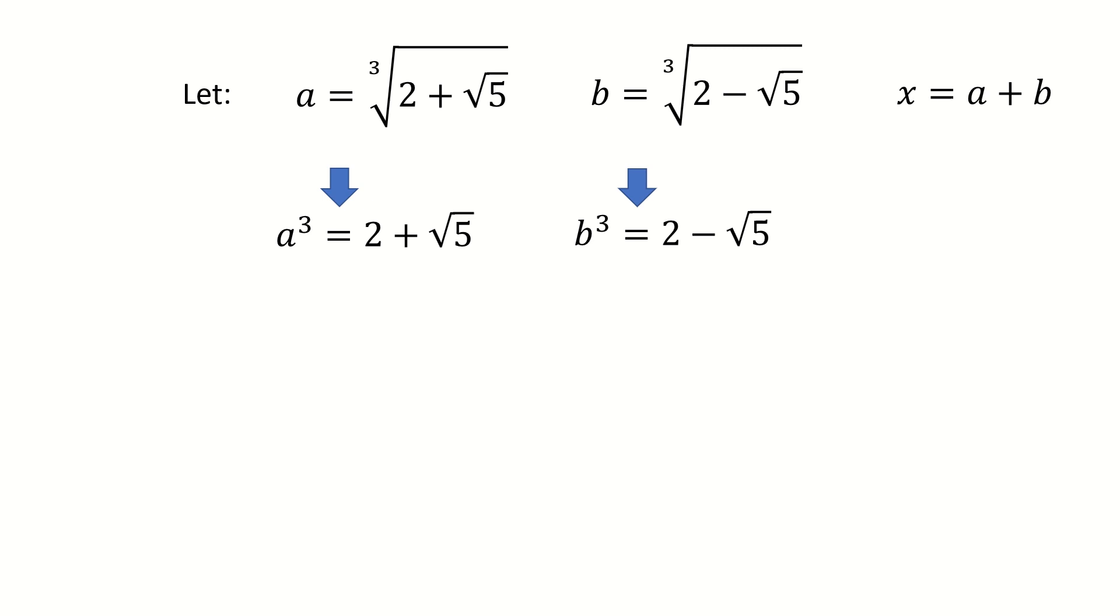Then we make the complete cube for both sides. Then we got a cube equals 2 plus square root 5, and b cube equals 2 minus square root 5. Then we added them together. So we got a cube plus b cube equals 4. And this is equation 1.